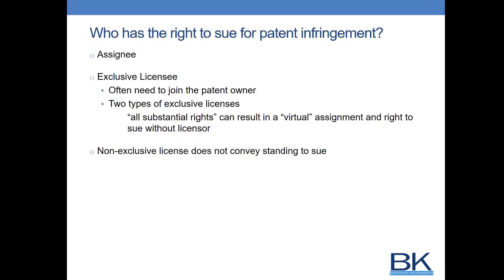Chris will now discuss exclusive licensee provisions. There are two general ways a party has standing to sue in patent infringement litigation: the patent owner or assignee, and the exclusive licensee — at least in the territory where they have exclusivity. There are two variations of exclusive licenses: the traditional exclusive license where exclusivity is granted in a territory but many rights are still retained by the patent owner (requiring the patent owner to be joined in suit), and the virtual assignment or 'all substantial rights' exclusive license where the exclusive licensee can sue alone. A non-exclusive licensee never has standing to sue by itself.